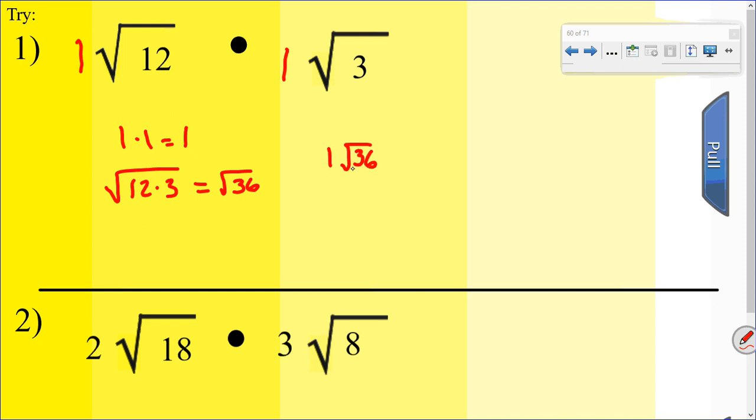And the 1 would be multiplied by the radical 36. Now, I noticed that I can simplify this, because the square root of 36 is 6. So I'd have 1 times 6, and that would give me 6. So 6 would be my answer that I should pull out. And let's pull it out, and there we go.